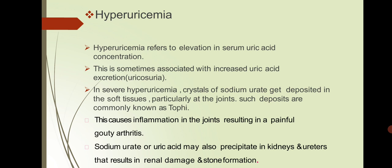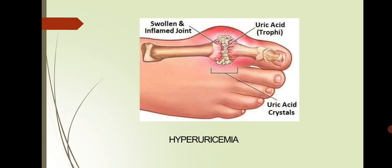The second disease is hyperuricemia. Hyperuricemia refers to the elevation in serum uric acid concentration. This is sometimes associated with increased uric acid excretion. In severe hyperuricemia, crystals of sodium urate get deposited in soft tissue, particularly in the joints. Such deposits are also commonly known as tophi. This causes inflammation in joints, resulting in painful gouty arthritis. Sodium urate or uric acid may also accumulate in the kidney and ureter, resulting in renal damage and stone formation.